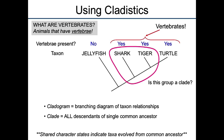Is this a clade? Why is it not a clade? We didn't get everything — we didn't draw a circle big enough. We've got shark, we've got tiger, but turtles are up here and we didn't include them. We didn't include all descendants of the single common ancestor, so that's why that would not be a clade.